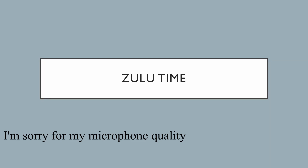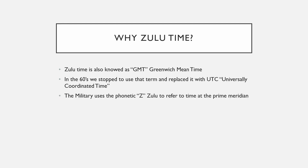Hello everyone and welcome to this video. Today you will learn what Zulu time is and, more importantly, how to calculate it. Zulu time is also known as GMT (Greenwich Mean Time), but in the 60s we stopped using that term and replaced it with UTC, universally coordinated time. The reason it's named Zulu is because the military uses the phonetic letter Z — Zulu — to refer to the time at the prime meridian. We use Zulu time because many times a route will cross time zones, so to avoid confusion about which time zone we are in, controllers and pilots use Zulu time by default.